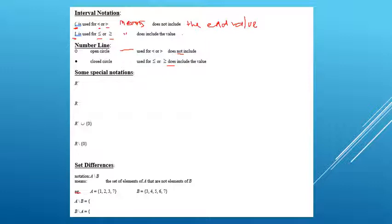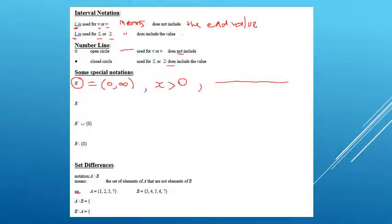Some special notations are shortcuts. If we use the symbol R plus, that's the same as the interval from zero to infinity. R plus doesn't include zero, so it uses a round bracket at zero. In set notation, this is x greater than zero. On a number line, we'd have zero marked, with an open circle and an arrow going out to the right.